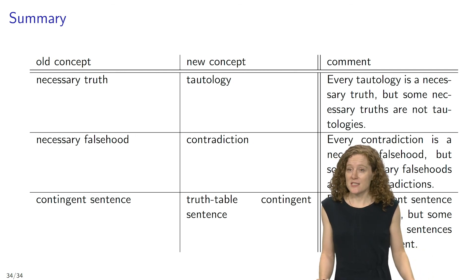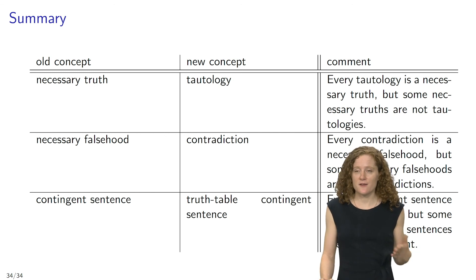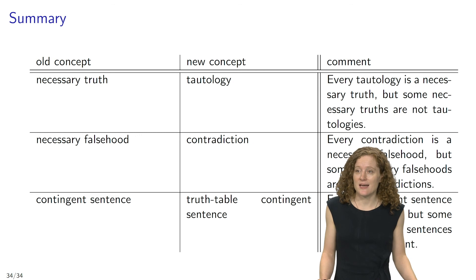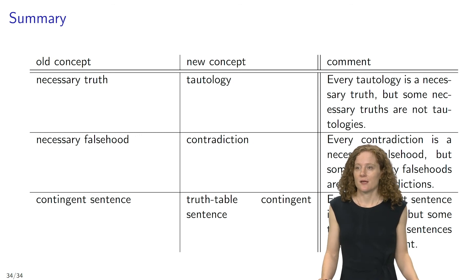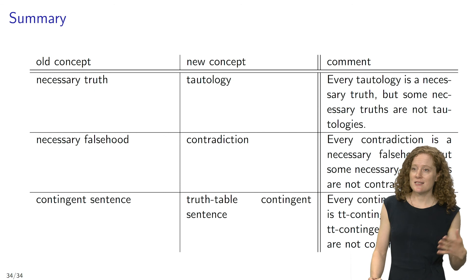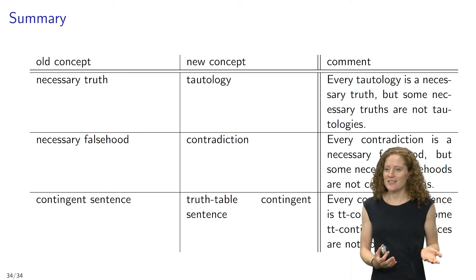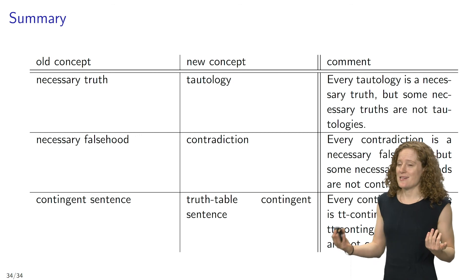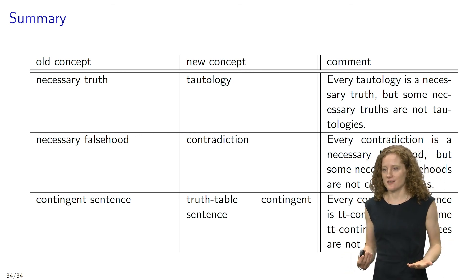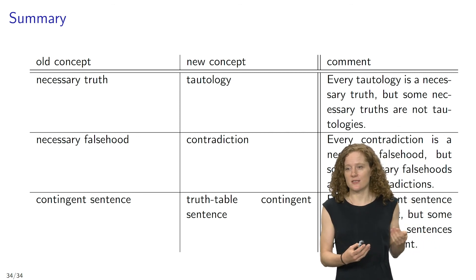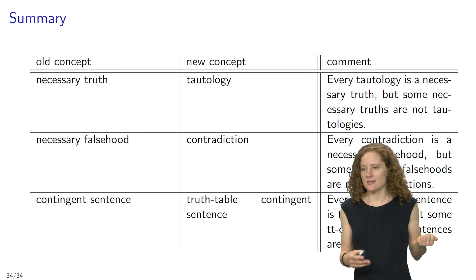Now that's progress — we found a specific strategy and approach for determining some of the logical properties of sentences. But this method nevertheless has limitations. Every tautology is a necessary truth, but some necessary truths are not tautologies. Similarly, every contradiction is a necessary falsehood, but some necessary falsehoods are not contradictions. And every contingent sentence is truth table contingent, but some truth table contingent sentences are not contingent.